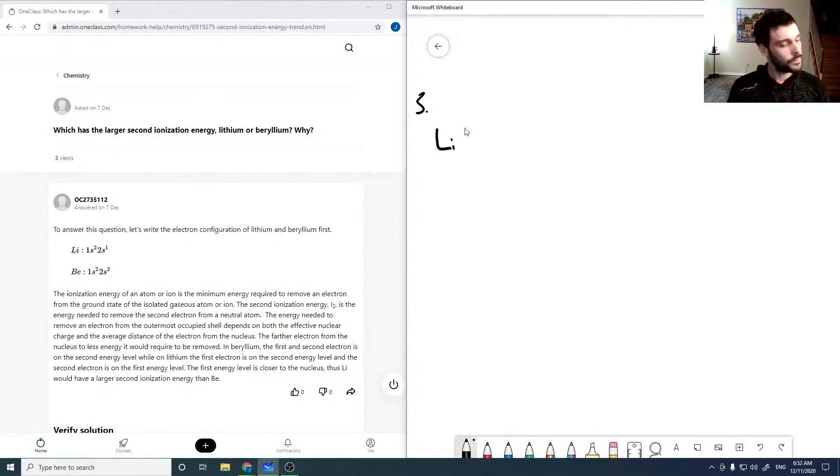So lithium is, if we look at our electron configuration, 1s2, 2s1, and beryllium is 1s2, 2s2.